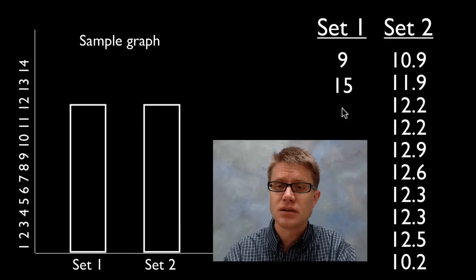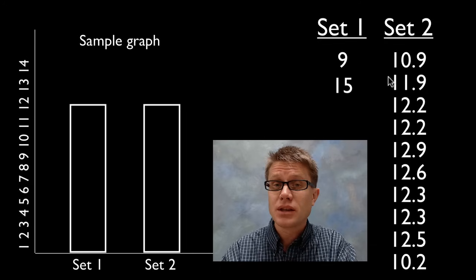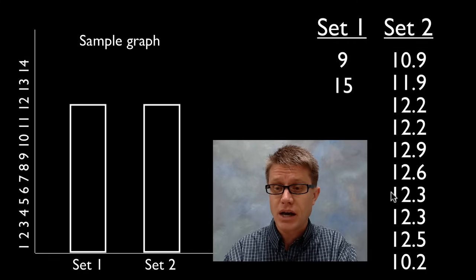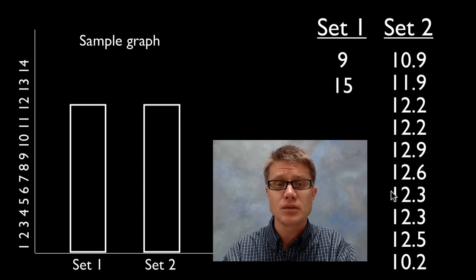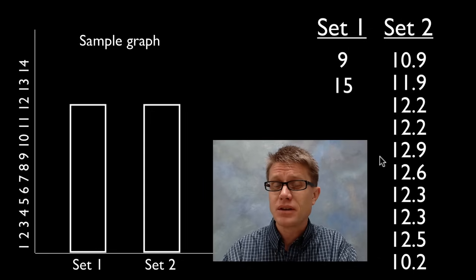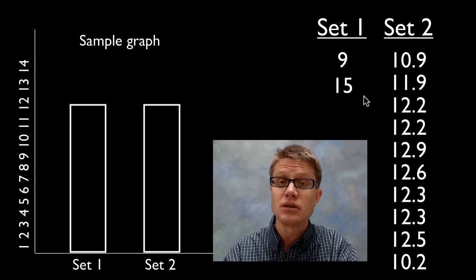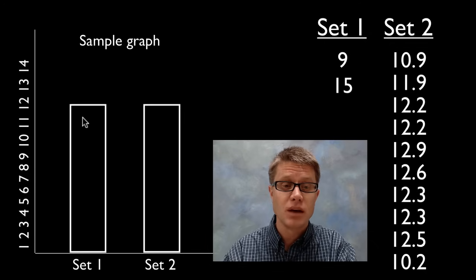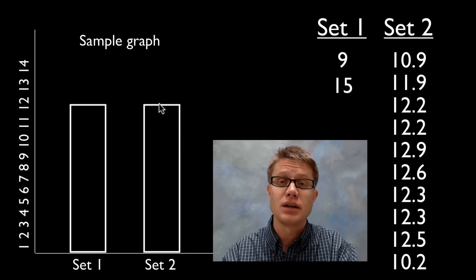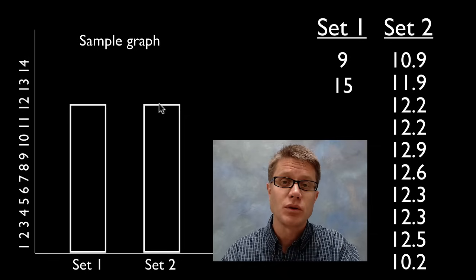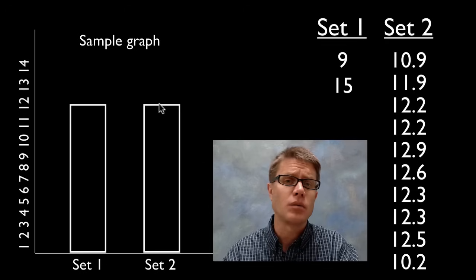So let's say I collect two data sets — data set one and data set two. If you were to look at the data you would say this one over here seems to show more precision; it's going to have more data and it doesn't seem to be spread out as much. But if I were to graph this data, if I were simply to create a graph showing the mean of the data, both of them would be 12. So if I had a bar graph it would look the same for both data set one and data set two. You should never have a bar graph representing a lot of data unless it has error bars on it.